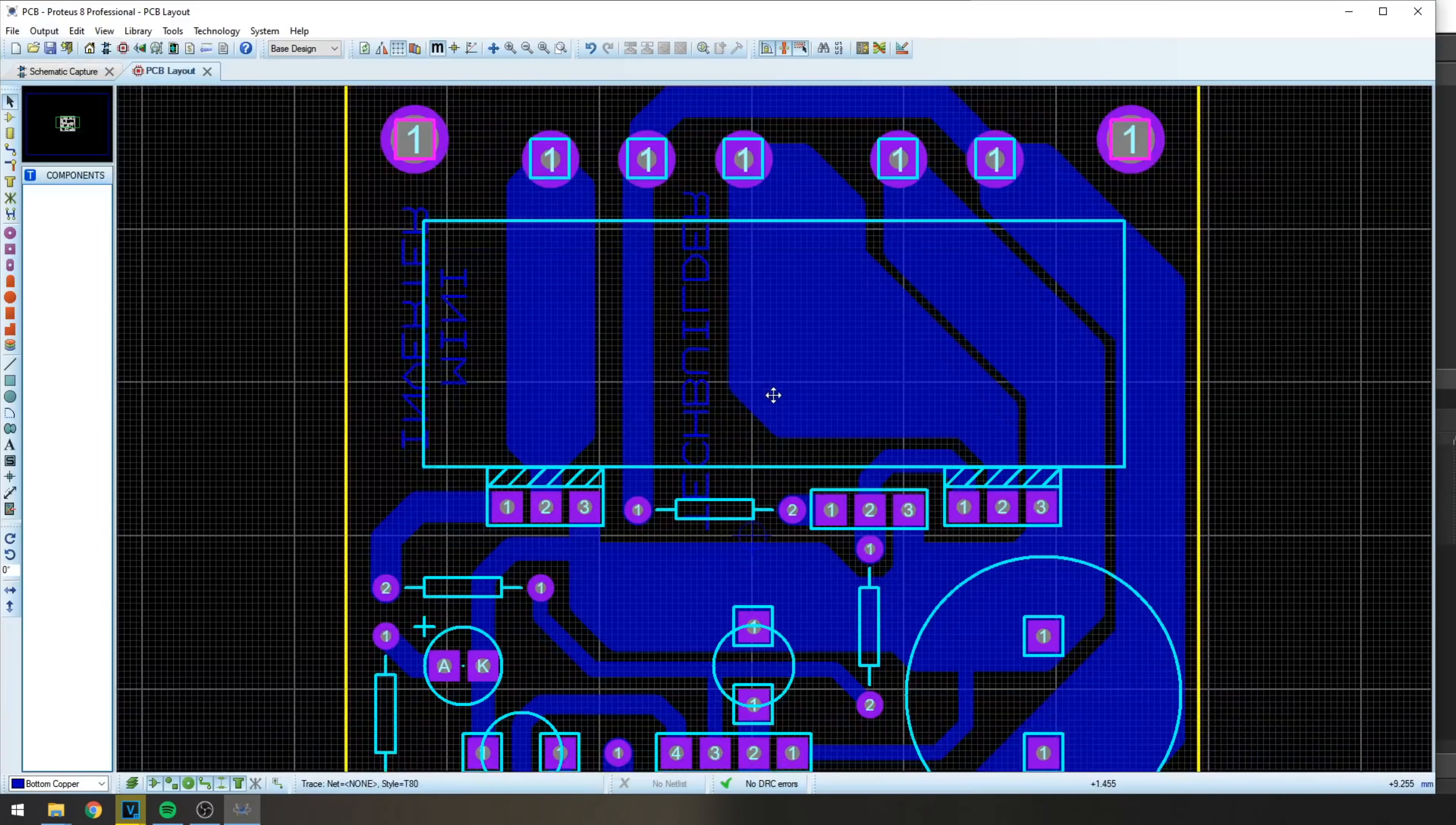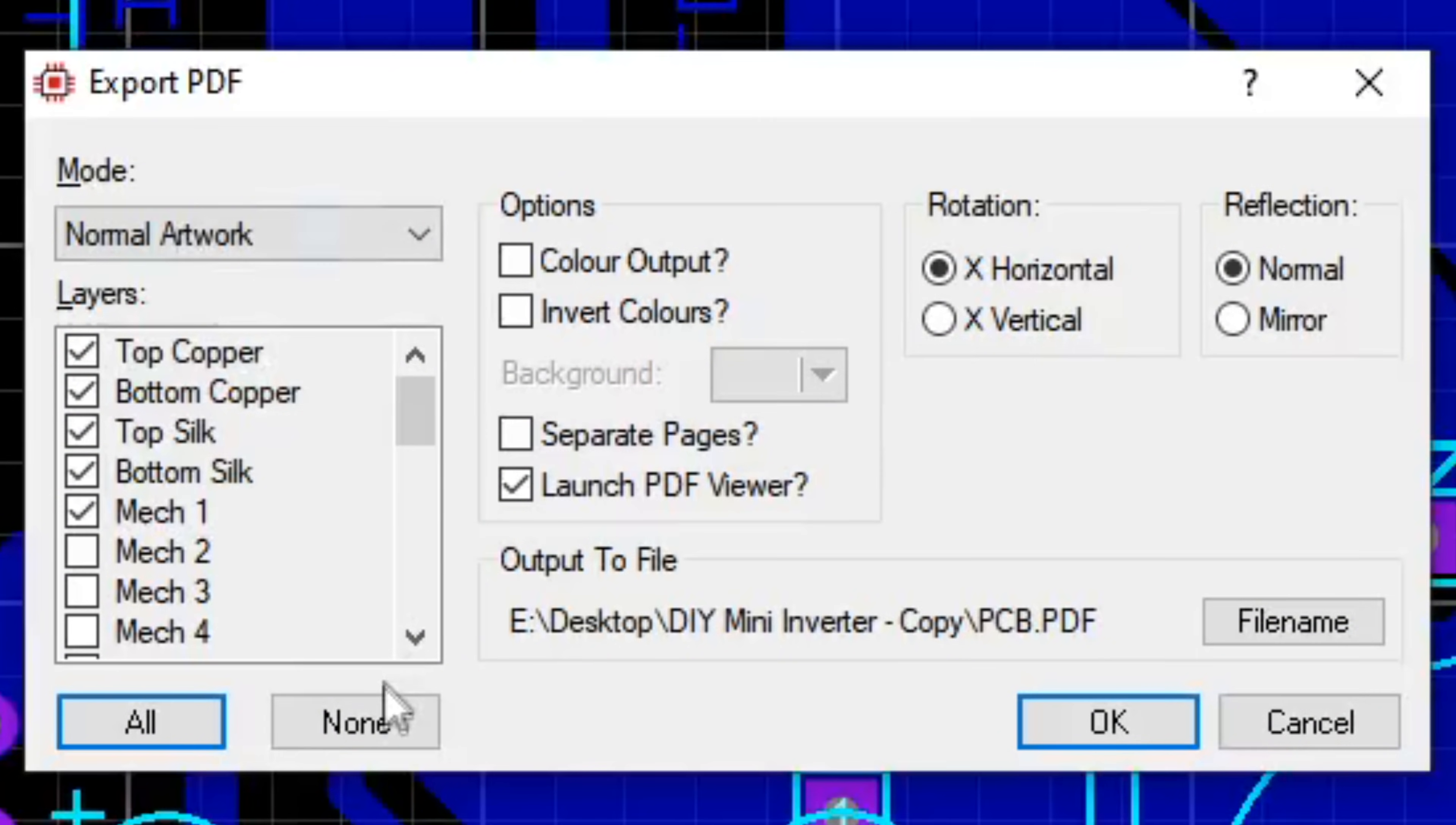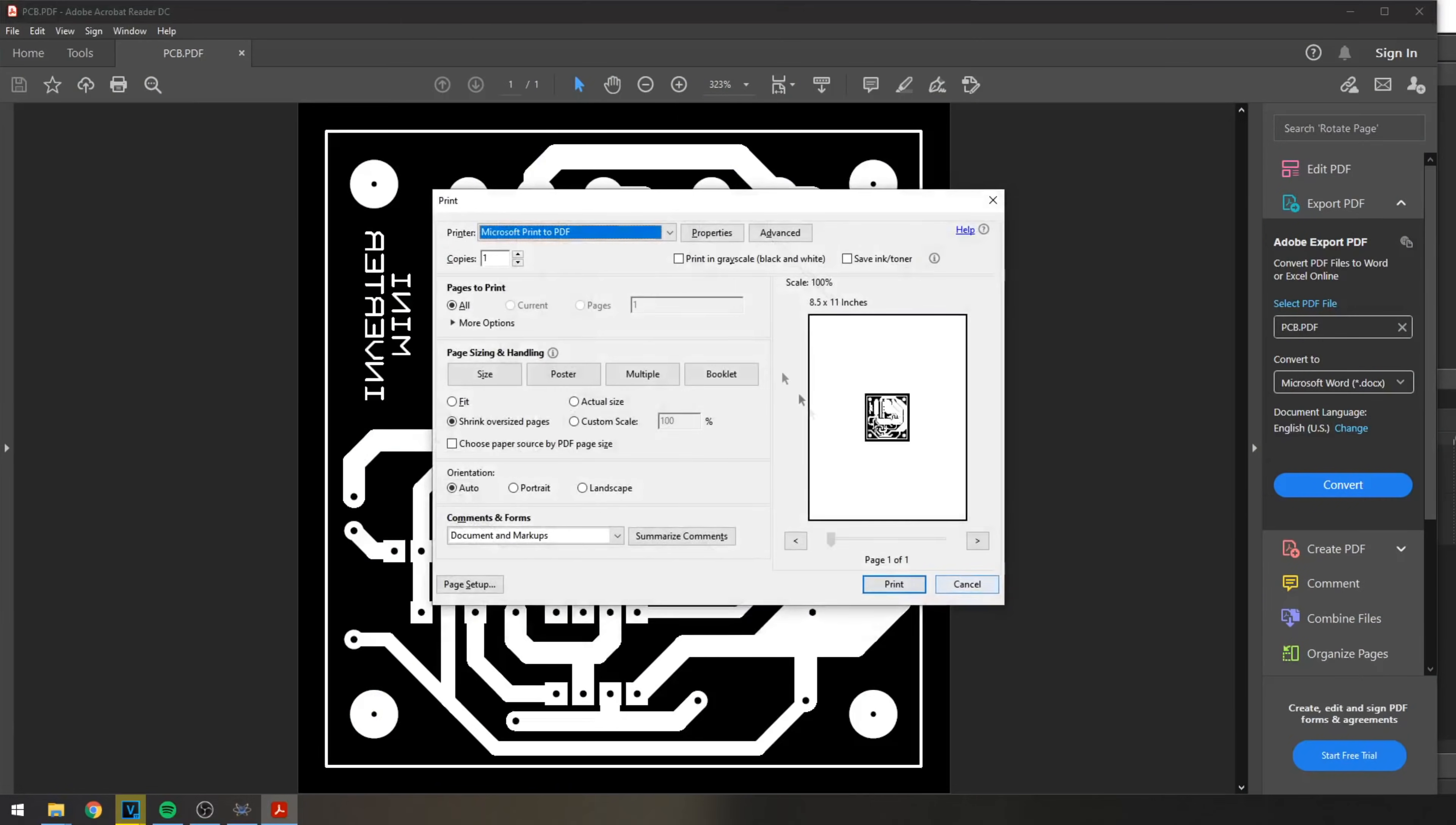You can achieve that by editing your PDF files on Photoshop or simply exporting your PCB artwork as PDF negatives straight from your PCB design software. A feature available for Eagle, Proteus, KiCAD, and Altium.